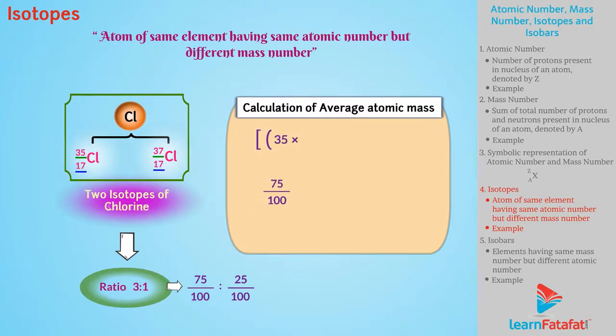35 into 75 upon 100 plus 37 into 25 upon 100 which equals 105 by 4 plus 37 by 4 which equals 142 by 4 which equals 35.5 unit.